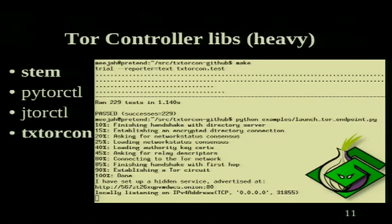There are a bunch of controller libraries these tools use underneath. STEM and PyTorControl are Python-based libraries you can use in your application to talk to Tor — you can ask about bandwidth, build circuits, set up hidden services, or reconfigure Tor. TXTorCon is a Twisted-based one with a pretty good interface for setting up a hidden service. The old model for a hidden service was to start Apache and hope you configured it correctly; the new model should be to spin up a web server inside Twisted.